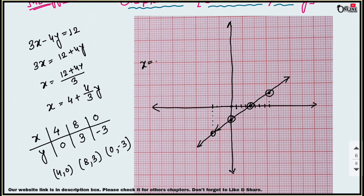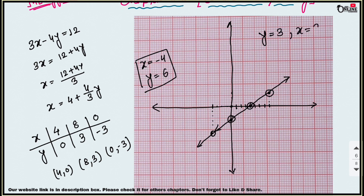So when x equals minus 4, y equals 6. That is your second answer. Now for the third part: find x when y equals 3. Locate y equals 3 on the y-axis, read across to the line, and x equals 8. So when y equals 3, x equals 8. That is your third answer.